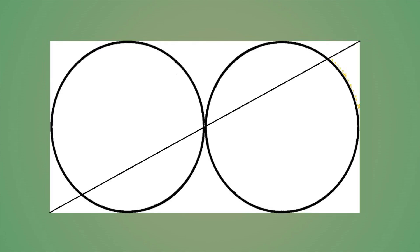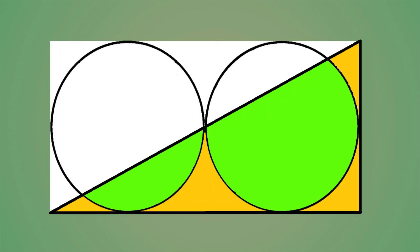It's a simple rectangle that contains two equal circles inside of it. Can you calculate the total area of these yellow regions? This question was assigned to sixth grade students in China.